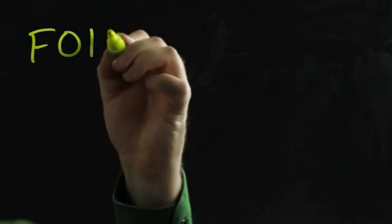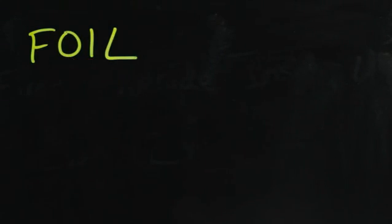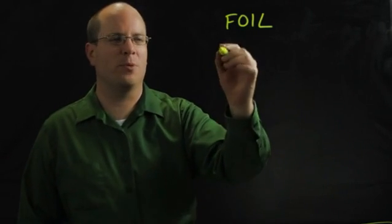FOIL is an acronym that stands for First, Outside, Inside, Last. Let me show you how you'd use that. It's a method of multiplying numbers.